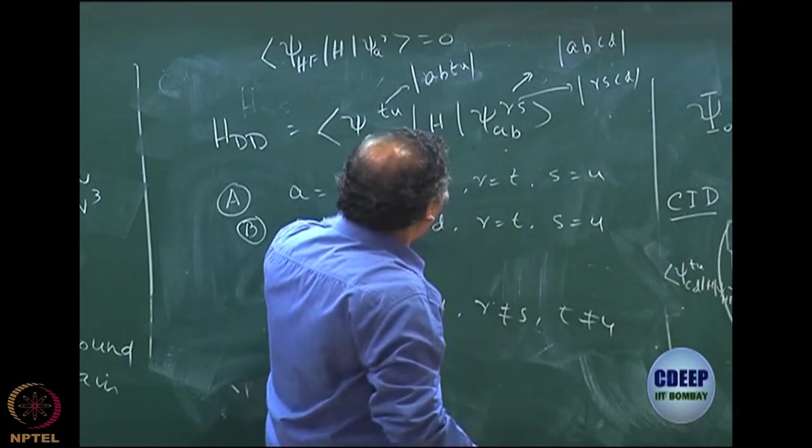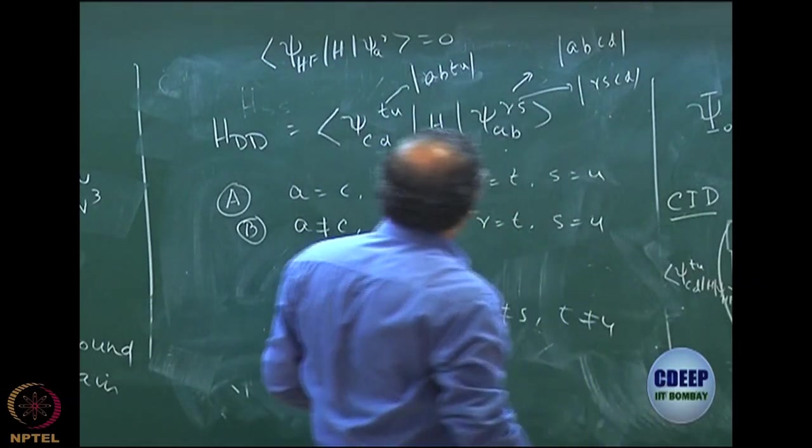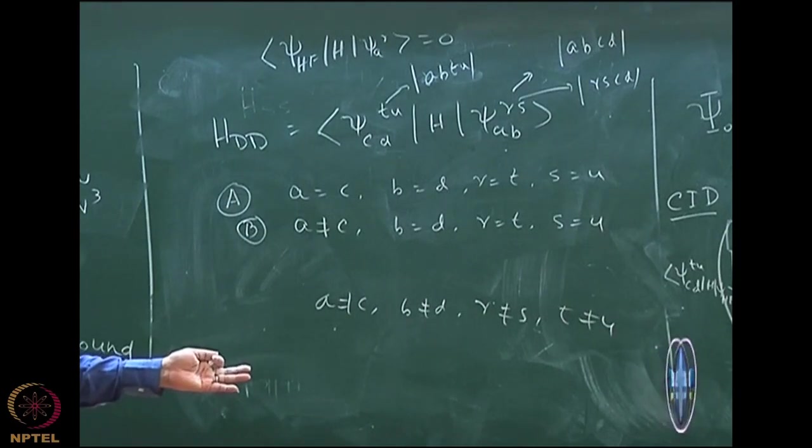You can clearly see that if I compare the RS, CD and AB, TU, all are different.